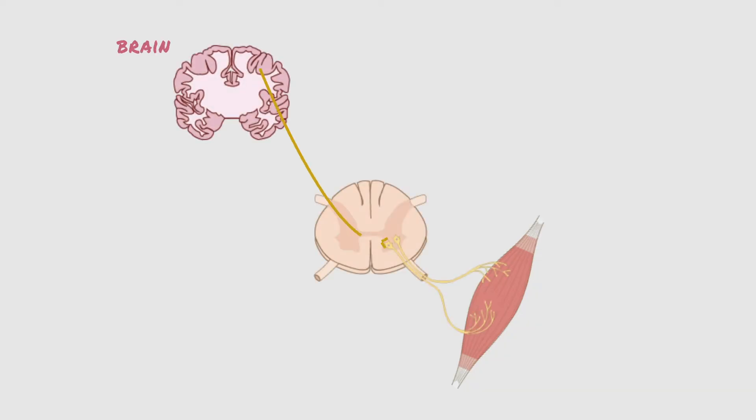In order for a skeletal muscle to contract, your brain sends a signal in the form of an action potential in an upper motor neuron. The upper motor neuron is part of the cerebral cortex, and it activates a lower motor neuron which is located in the anterior horn of the spinal cord.